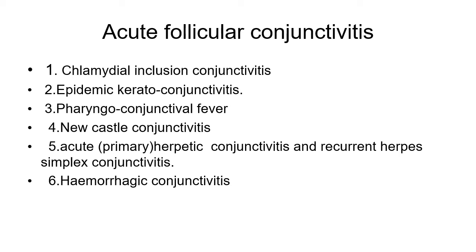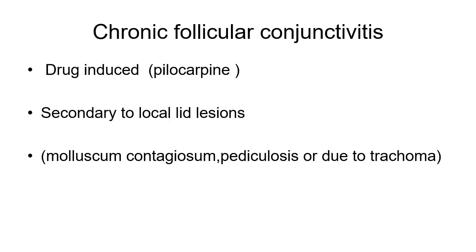Acute follicular conjunctivitis can be seen in chlamydial conjunctivitis, epidemic keratoconjunctivitis, pharyngoconjunctival fever, Newcastle conjunctivitis, acute primary herpetic conjunctivitis, recurrent herpes simplex conjunctivitis, and acute hemorrhagic conjunctivitis. Chronic follicular conjunctivitis is due to drug induction (e.g., pilocarpine), secondary to local lid lesions such as molluscum contagiosum or pediculosis, or due to trachoma.